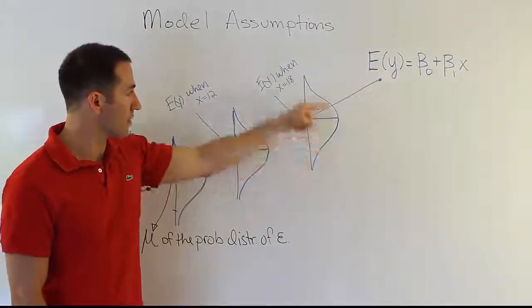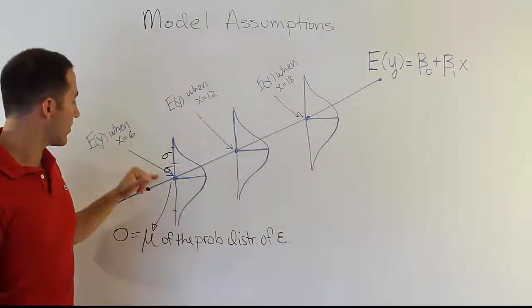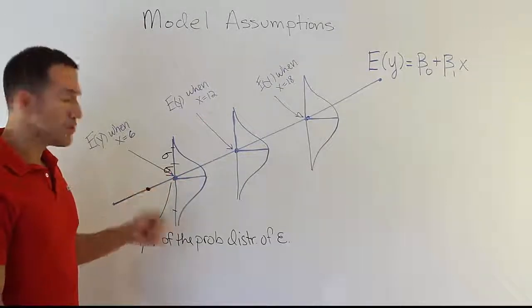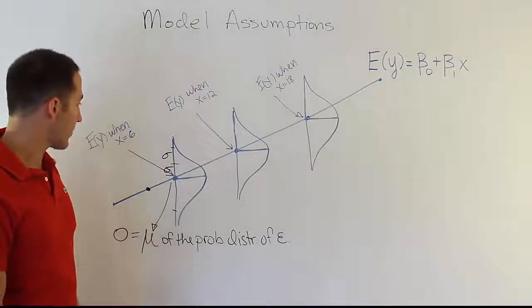So you don't see a different bell curve when x is 20. We see the same bell curve there for the error term. And there's a constant standard deviation or variance for those error terms. They have a bell-shaped distribution and they're centered at zero. That's the error term basically.